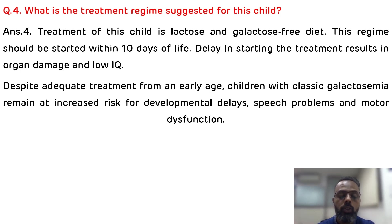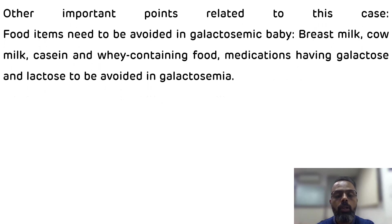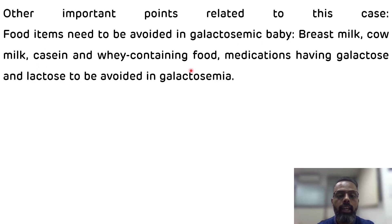Apart from treatment, food items to be avoided in a galactosemic baby include breast milk, cow milk, casein, whey-containing foods, and medications containing galactose and lactose.